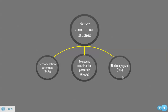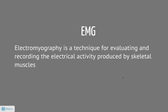Electromyography is a technique used to evaluate and record the electrical activity produced by skeletal muscles. Information is transmitted along nerves as a series of electrical discharges, carrying information in pulse repetition frequency, and that is what is detected by an EMG.